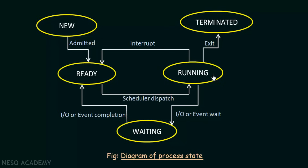After coming to the running state there are three cases that can occur. The first case is it finishes its execution, exits, and goes to the terminated state — there was no interruption and it was properly executed. The second case is that an interrupt occurs when the process is being executed; for example, another process with high priority comes in and this process is interrupted. When it gets interrupted it goes back to the ready state, and once the interrupt has been handled it can again be dispatched, assigned a processor, and go to the running state again.